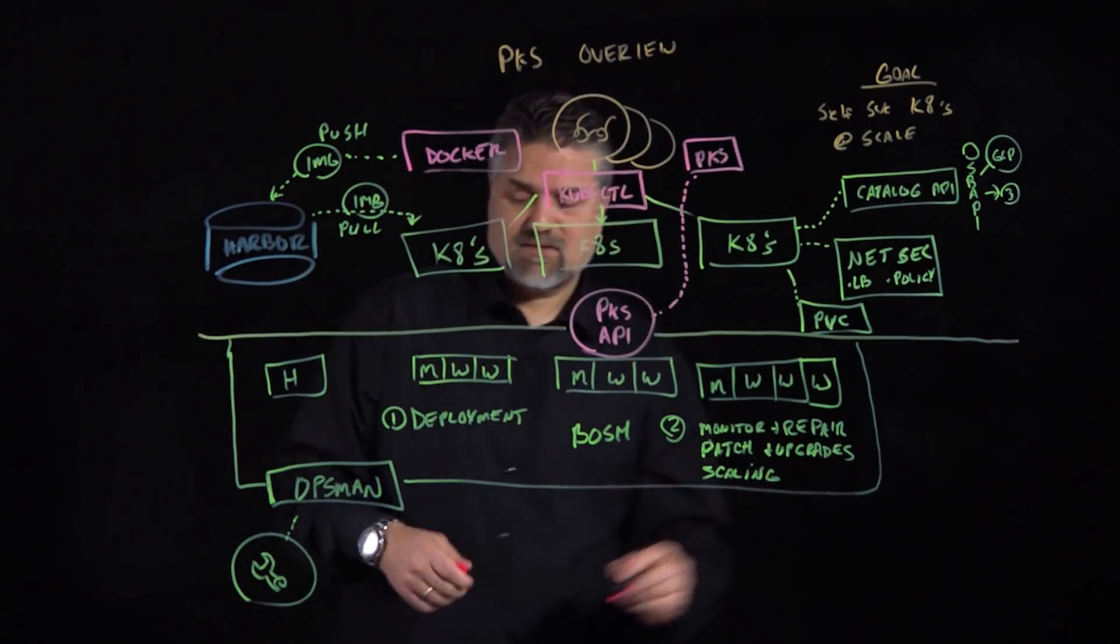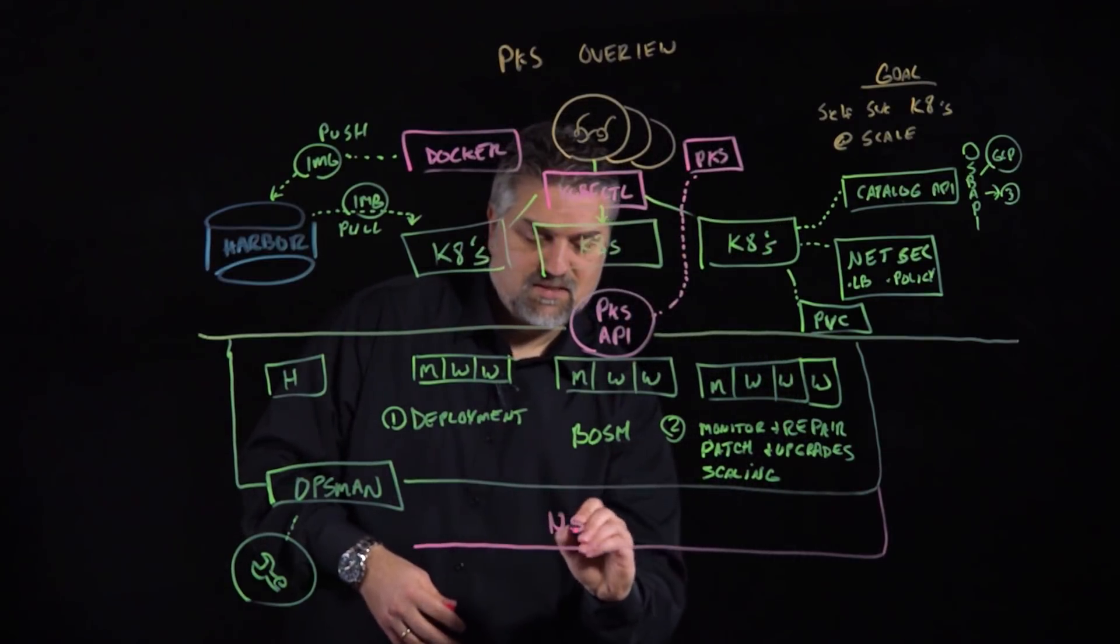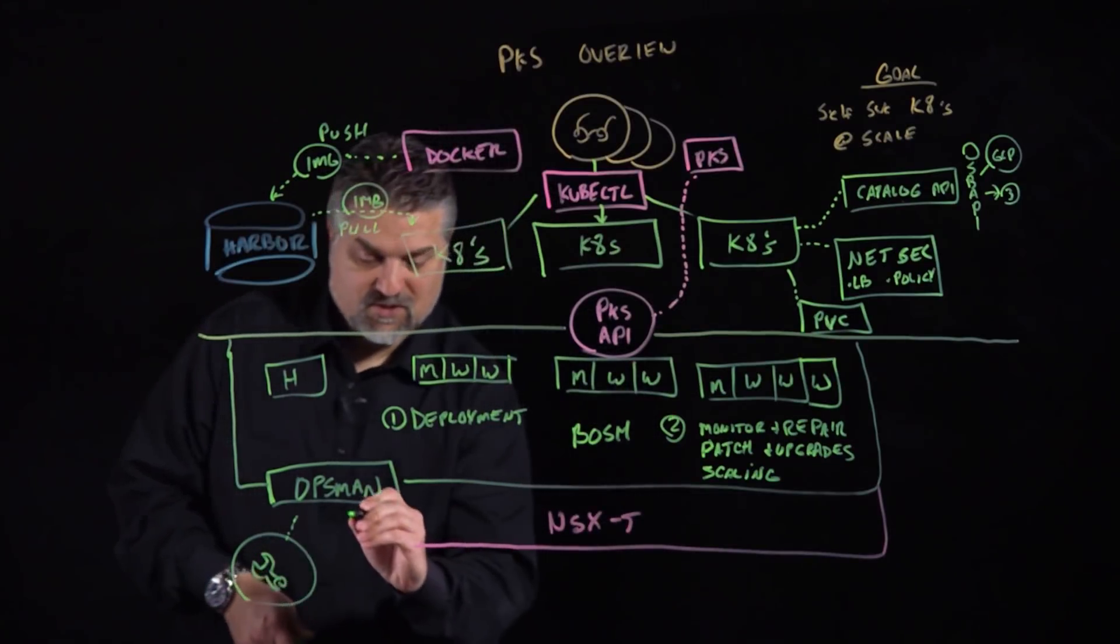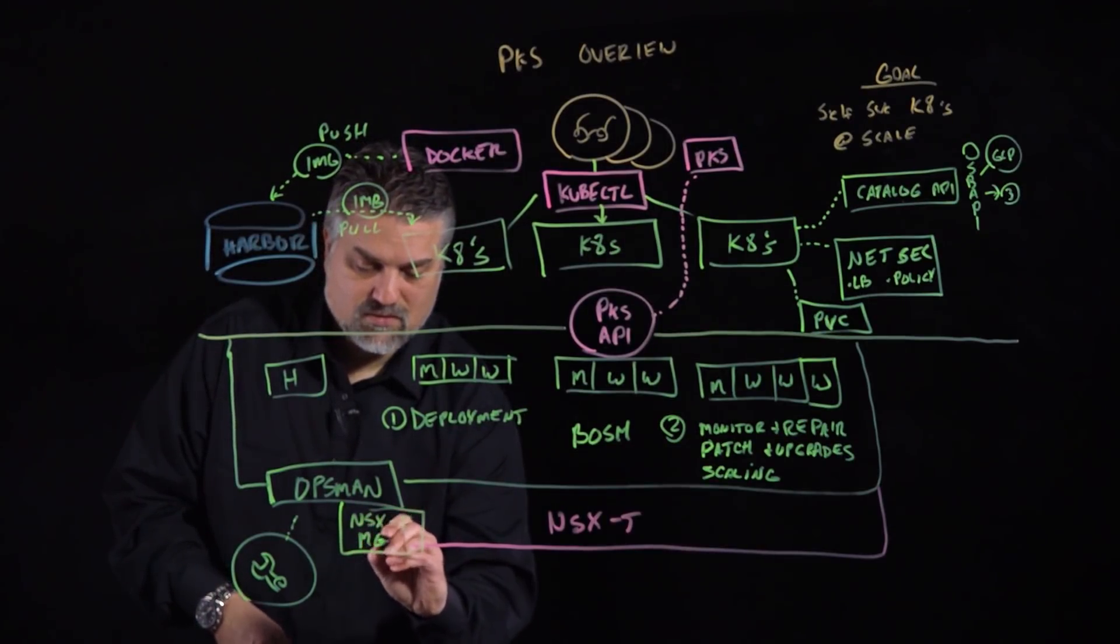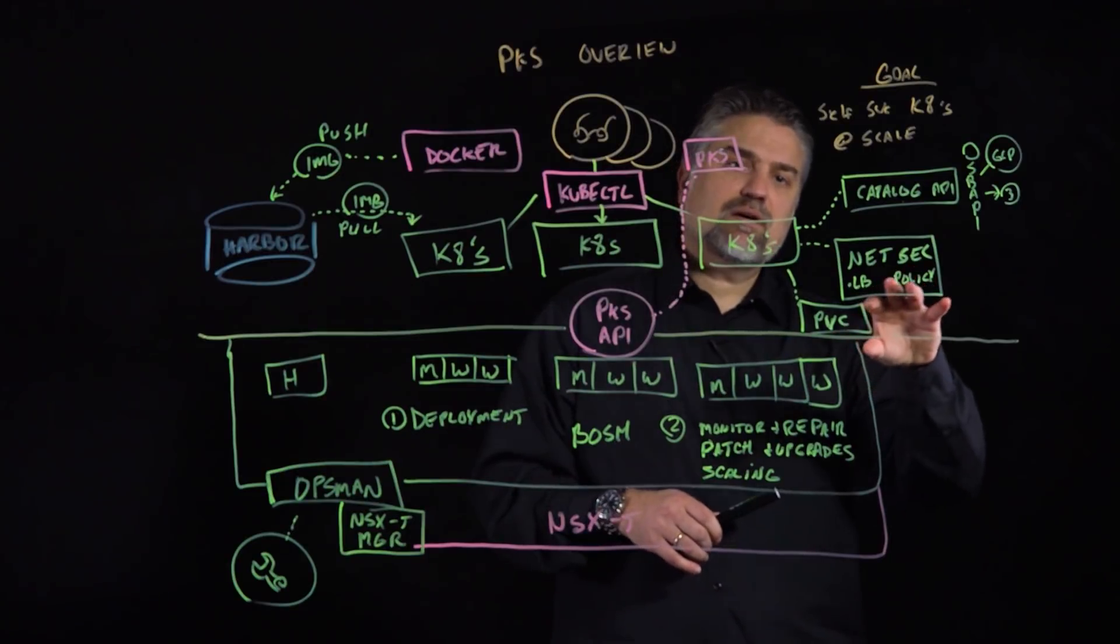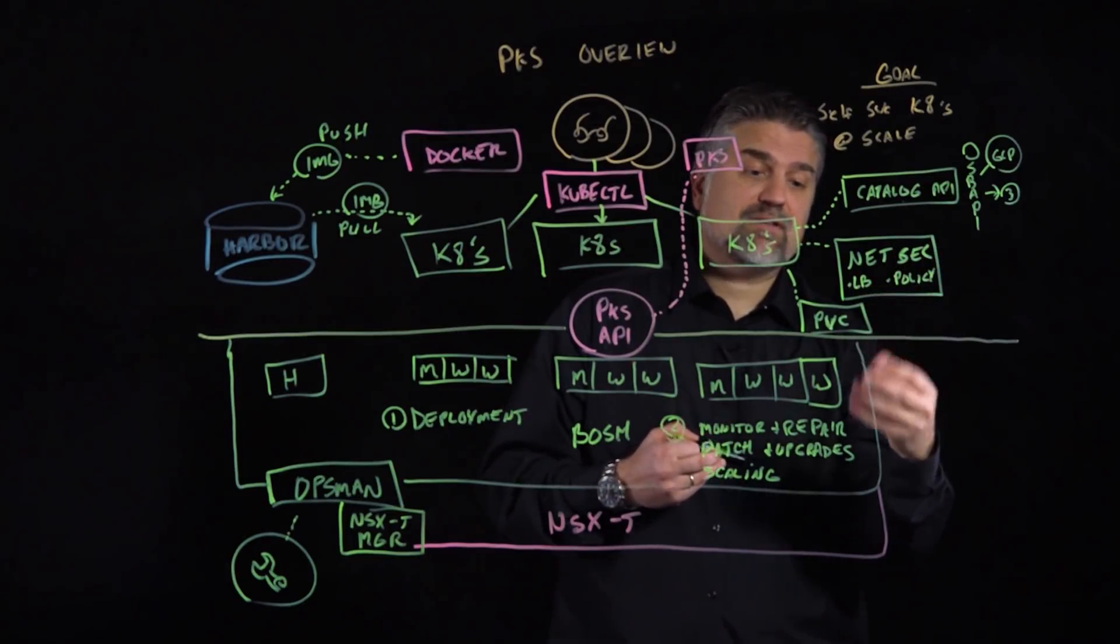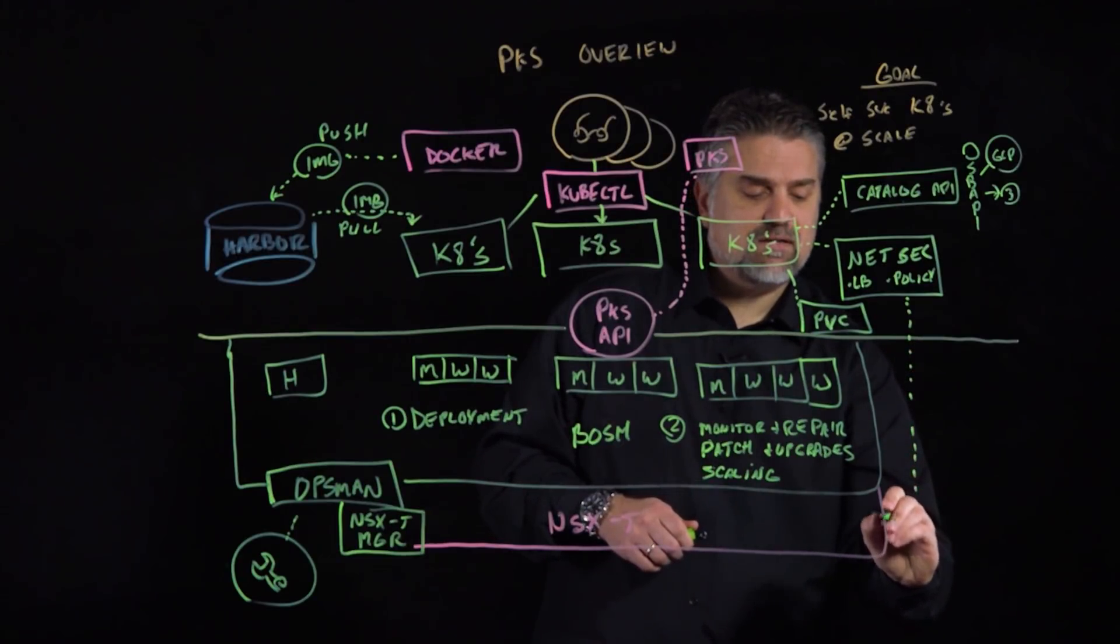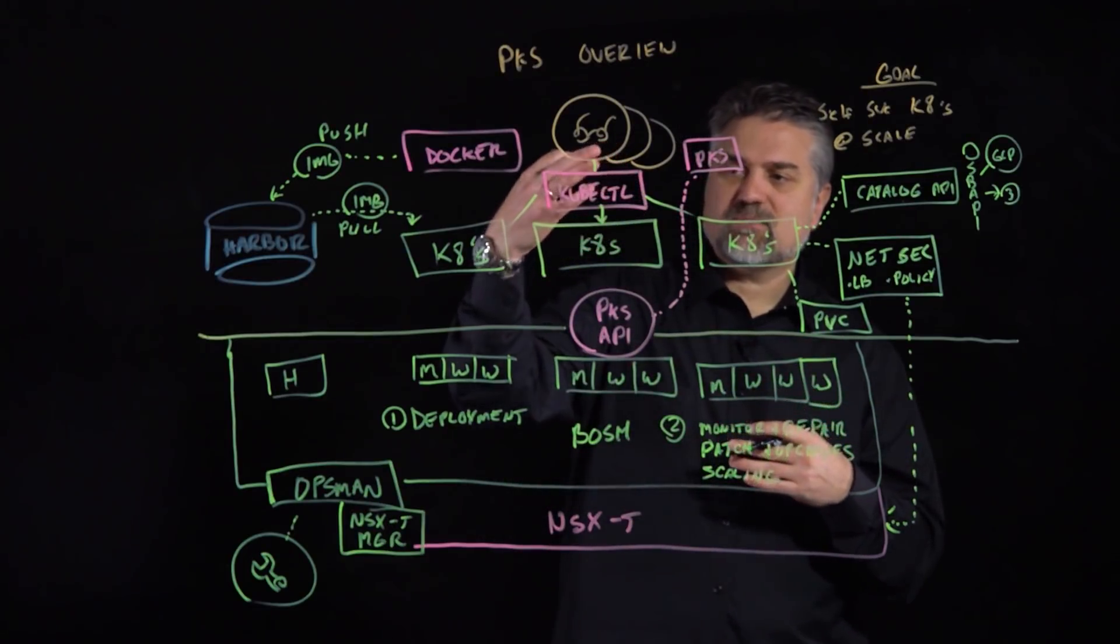And our operator can actually interact with NSX via something called NSX manager or the NSX-T manager. So what happens here is our integration with Kubernetes is anytime the application that the developer or the pipeline is pushing needs a security policy or needs a load balancer construct, our integration with Kubernetes is actually having that automagically created. It's being deployed as the event of the object being created in Kubernetes.